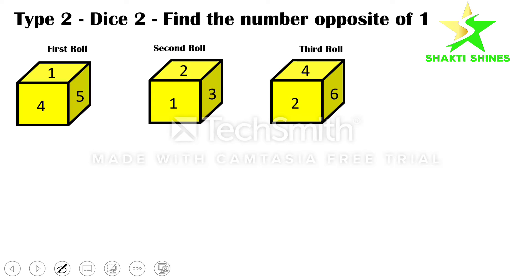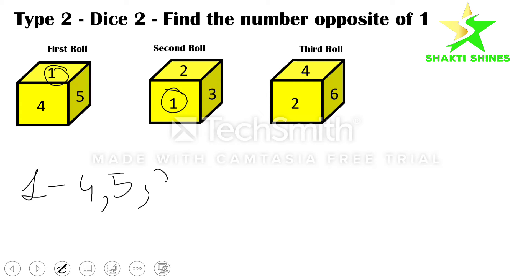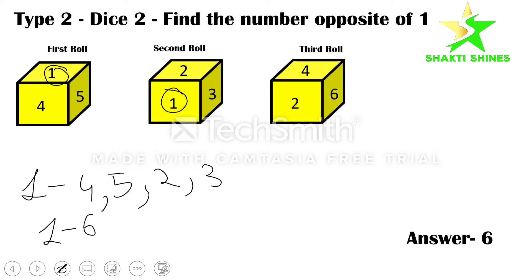In the third roll it's showing two, four, six. To find the opposite of one, we take the number itself. The number one is common — it appears in the first roll and the second roll. So except one, in the first roll we have four and five; in the second roll we have two and three. The number missing from one to six is six. So one and six are opposites. Let's check — the answer is correct, it is six.